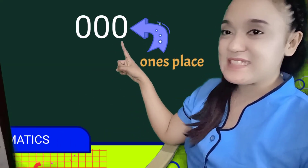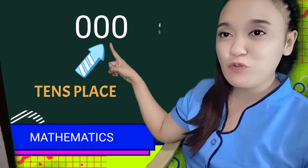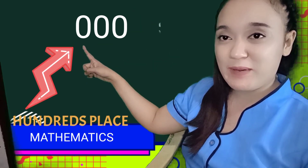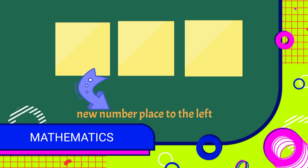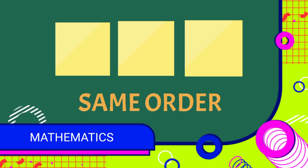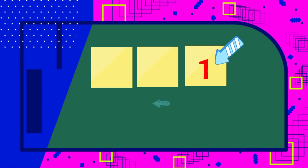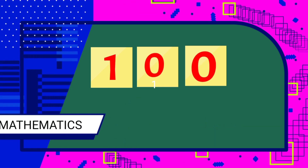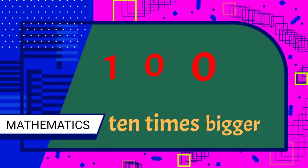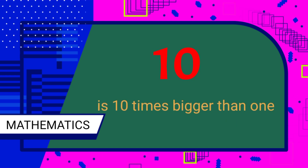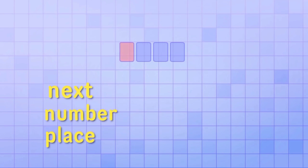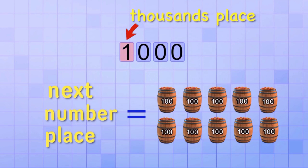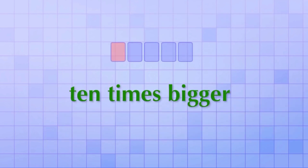The digit in the ones place tells us how many ones we have. The digit in the tens place tells us how many groups of 10s we have. And the digit in the hundreds place tells us how many groups of 100s we have. Each time we get a new number place to count larger groups, we place it to the left of the previous number place. That's important because all number places are always arranged in the exact same order. Starting in the ones place, as you move to the left, the number represents bigger values. Each number place represents groups that are exactly 10 times bigger than the previous one. 10 is 10 times bigger than 1. 100 is 10 times bigger than 10. The next number place is 10 times bigger than 100, which is 1,000 — that's why it's called the thousands place. The number place 10 times bigger than that is the 10,000s place.